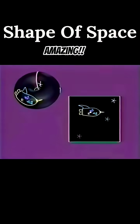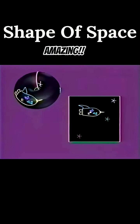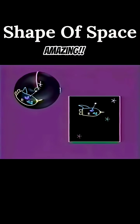What do the Flatlanders see in this universe? Their line of sight travels around the universe, and they see the back of their own spaceship. Like the Flatlanders themselves, their line of sight can't leave their two-dimensional space.